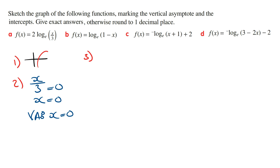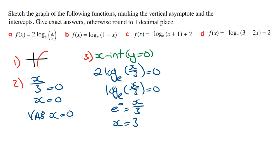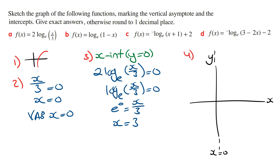Because the line x is equal to zero is the vertical asymptote, there's not going to be any y intercept. To work out the x intercept we let y equal zero, giving 2 log e of x over 3 equals zero. Dividing both sides by 2, log e of x over 3 equals zero, so e to the zero equals x over 3. E to the zero is 1, so multiplying both sides by 3 gives x is equal to 3. The x intercept is 3. On the axes we draw the vertical asymptote at x equals zero, mark the x intercept, and sketch the graph.